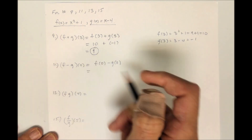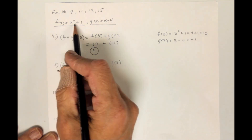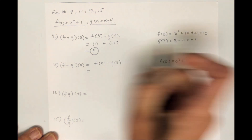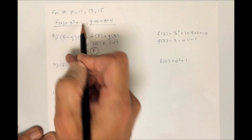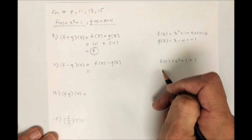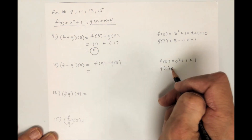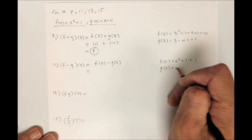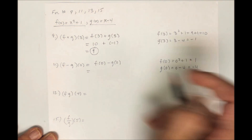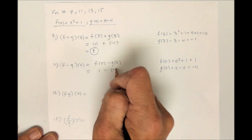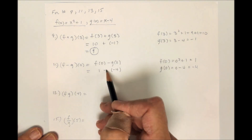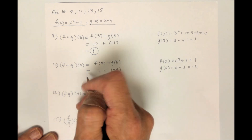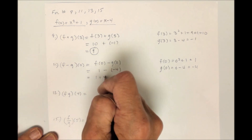So f of 0 — you're going to plug 0 into the rule for f. F of 0 would be 0 squared plus 1, which is just 1. And g of 0, using this rule, would be 0 minus 4, which is negative 4. So I have 1 minus negative 4 — g of 0 is negative 4, so subtracting the negative is the same as adding the opposite, so my answer is 5.